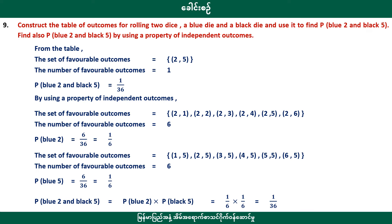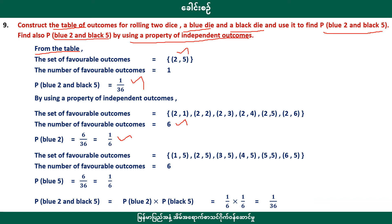Construct the table for rolling two dice — one blue die and one black die — to find the probability of blue die showing a certain value and black die showing 5, using the probability of independent events. Blue 1 and black 5: probability is 1 by 6 times 1 by 6, equals 1 by 36.